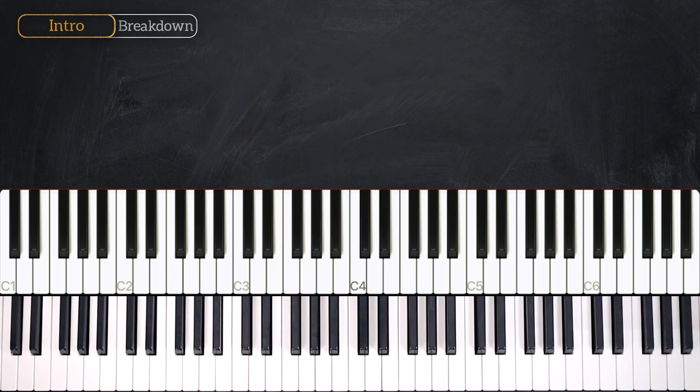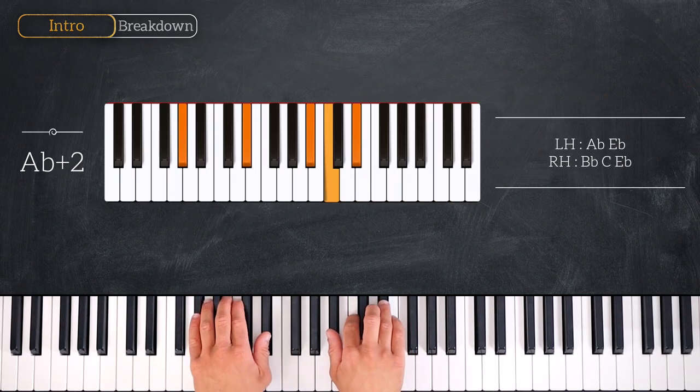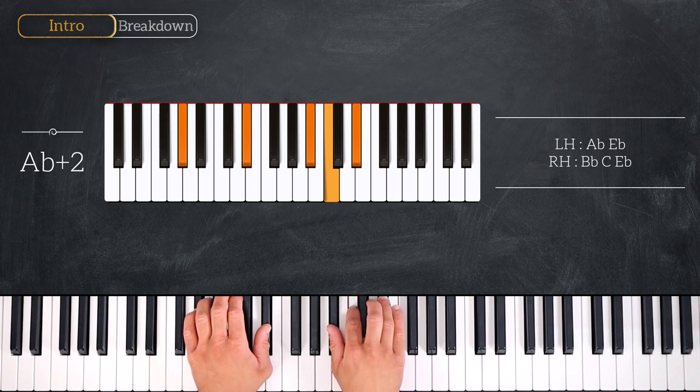Okay, here are the chords. We start on the first degree playing this Ab major at 2. We have Ab and Eb on the left hand and Bb, C, Eb on the right hand.